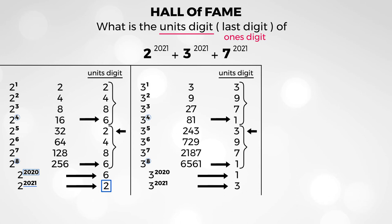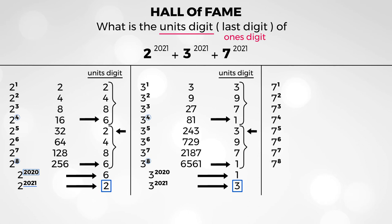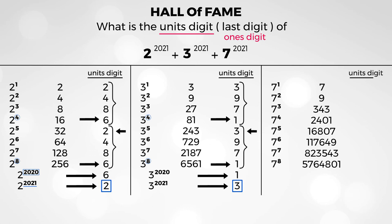So that takes care of 3. Now we get to our final term: 7 to the power of 2,021. For 7 to the power of 1 through 7 to the power of 8, the units digits are: 7, 9, 3, 1, 7, 9, 3, 1. And again, we have a repeating pattern with a cycle of 4.